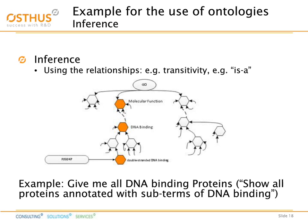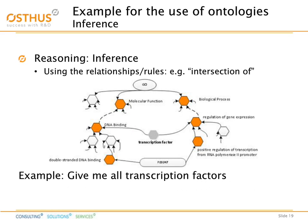A second example: one can define that a DNA binding protein which regulates gene expression is a transcription factor. If a protein is annotated with double-stranded DNA binding capabilities and positive regulation of transcription capabilities, then the computer knows that this is a transcription factor, although it is not explicitly described in the data set. This technology enables biologists to identify protein function even when that function is not directly stated in the data set itself.